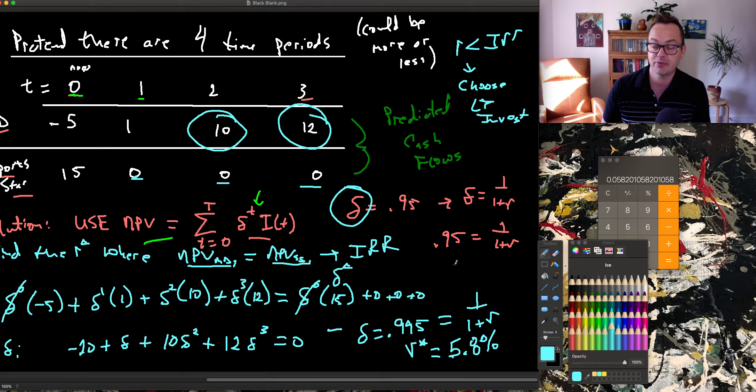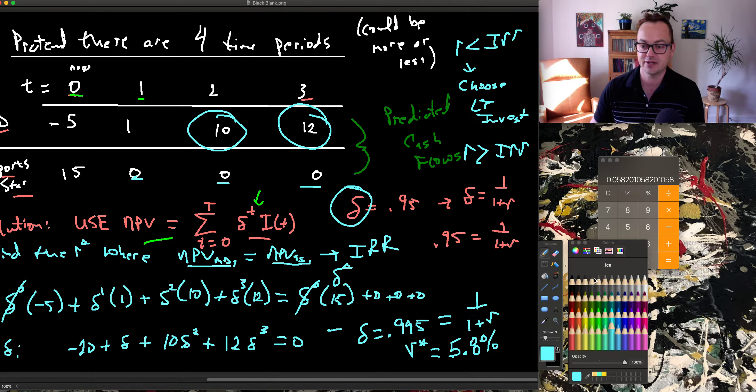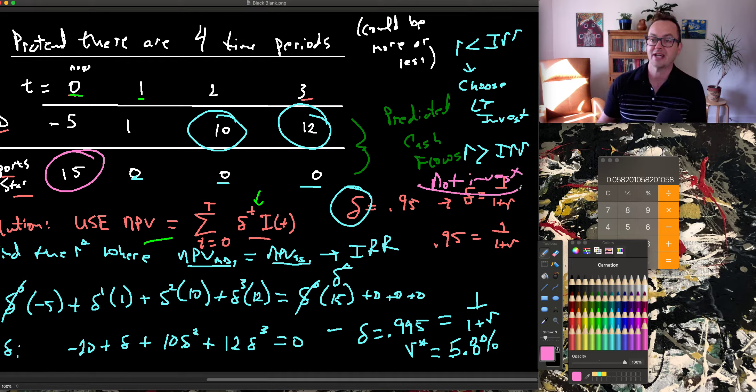If my rate is greater than the IRR, if it were having to be greater than 5.8%, then I would choose the immediate cash flow. So I would not invest in later cash flows.